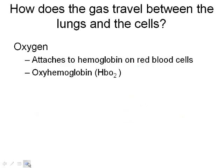The big picture question is: how does gas actually travel between the lungs and the cells? It diffuses from the lungs into the blood, and from the blood into the cells — but what carries it? It's in the blood. For oxygen specifically, it attaches to hemoglobin on the red blood cells, and once oxygen is attached to hemoglobin, we call it oxyhemoglobin.